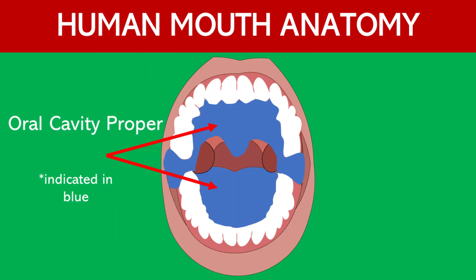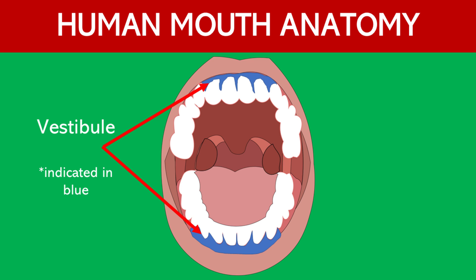Oral cavity proper. This is the main area inside the mouth, bordered by the teeth and gums, where food is chewed and mixed with saliva. Vestibule. The vestibule is the space between the inner cheeks and lips and the teeth and gums. It's the area you can see when you open your mouth slightly and look inside.